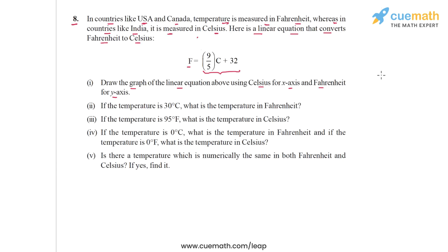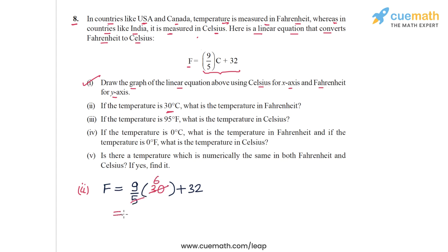We've completed Part 1. Part 2 asks: if the temperature is 30°C, what is the temperature in Fahrenheit? We substitute C = 30 into the equation: F = 9/5 × 30 + 32. Since 30/5 = 6 and 9 × 6 = 54, we get 54 + 32 = 86. So 30°C equals 86°F.